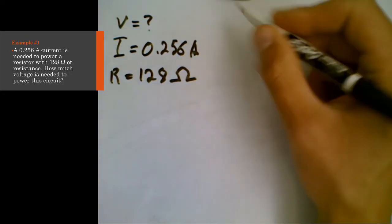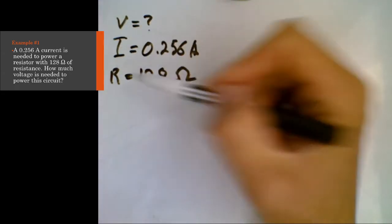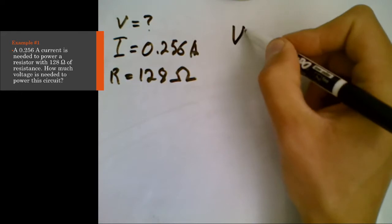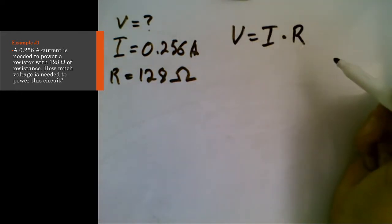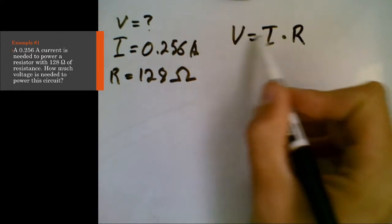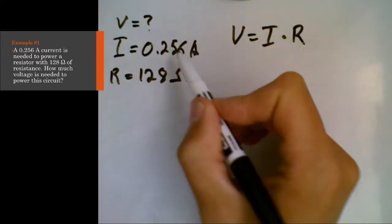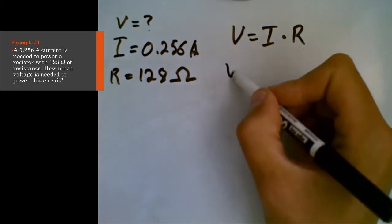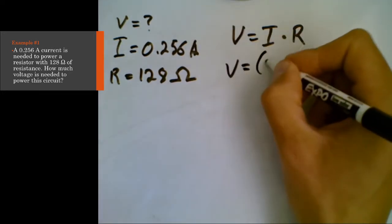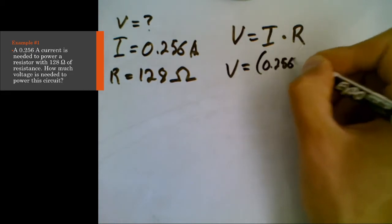In order to do that, we need to look at an equation that includes all of these variables. And so that is going to be Ohm's law, V equals I times R. Now in this case, we don't need to do any rearranging because we know I, we know R, we're trying to find V, and V is already isolated.